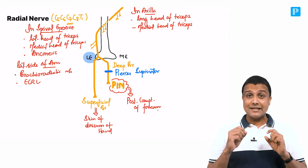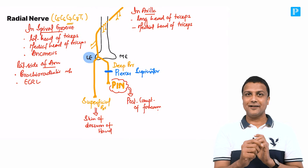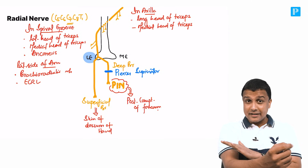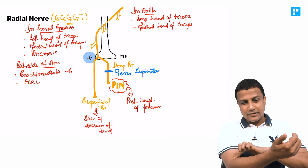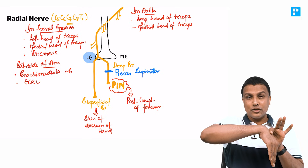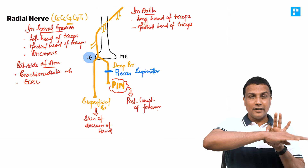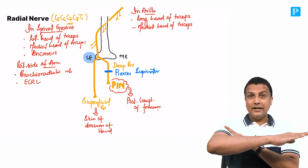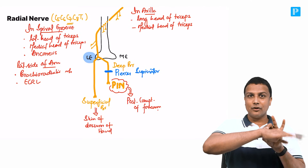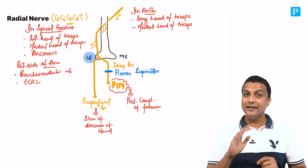Landmark two is ECRL — extensor carpi radialis longus. ECRL is one of the strongest extensors at the wrist joint. If ECRL is gone, you will not be able to extend the wrist — there will be a wrist drop. So ECRL is how you decide whether wrist drop will be present.